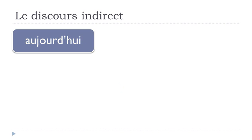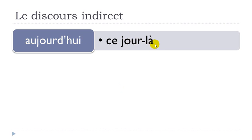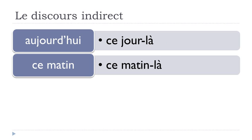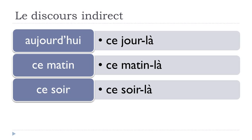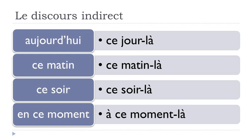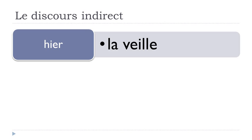If you say aujourd'hui — today — at the direct form, in the discours indirect it becomes ce jour-là. So aujourd'hui is not used in the indirect form; you use ce jour-là instead. Similarly: ce matin — this morning — becomes ce matin-là; ce soir becomes ce soir-là; and en ce moment — at this time — becomes à ce moment-là. Hier — yesterday — becomes la veille.